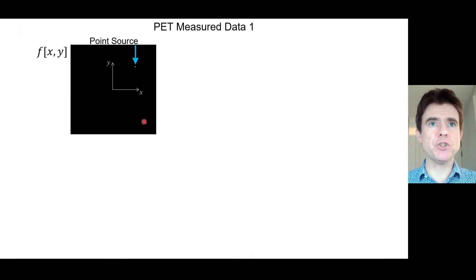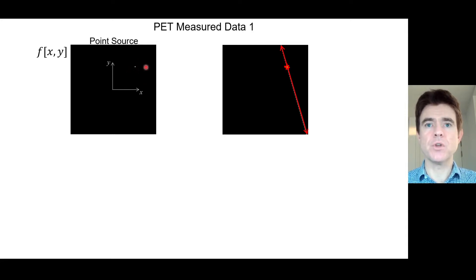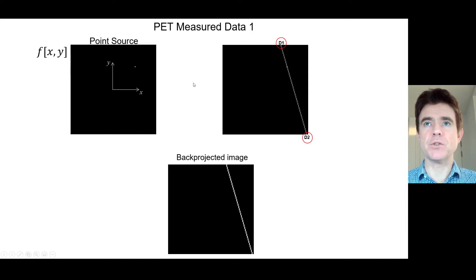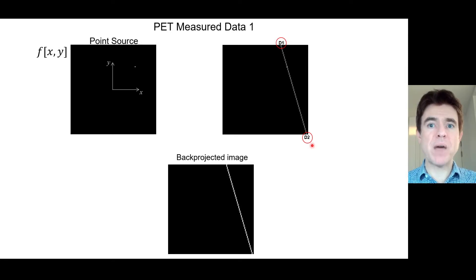Imagine inside the field of view of the scanner we just had one single point source — a radioactive concentration f as a function of x and y position. A back-to-back photon pair is emitted from that point source of fluorine-18-labelled FDG and detected by the ring of detectors. We create a separate array in computer memory and draw a line through that empty array according to the known positions of the two detection points, back-projecting along the line along which we detected that pair of photons.